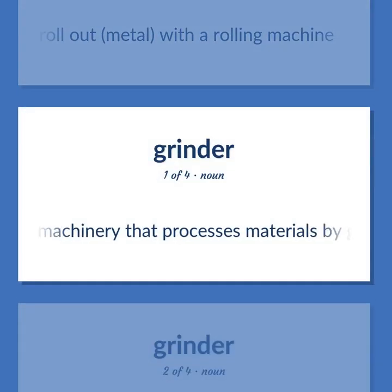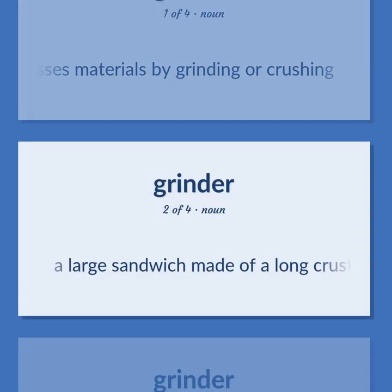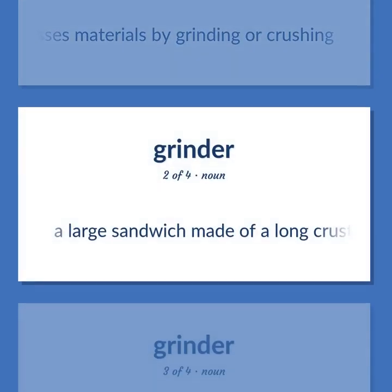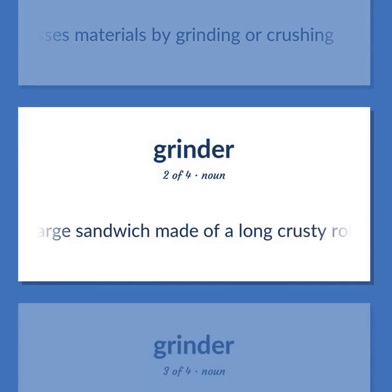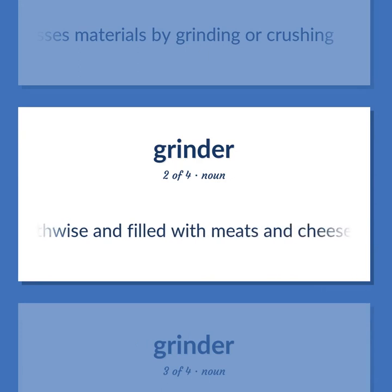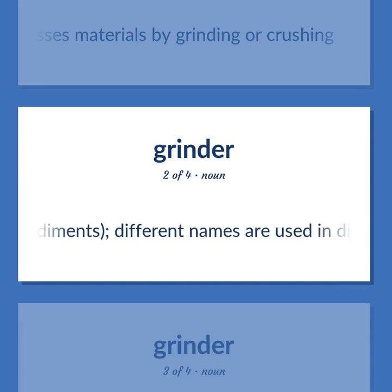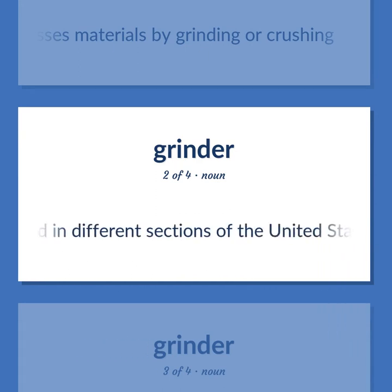Mill: Machinery that processes materials by grinding or crushing. Also: a large sandwich made of a long crusty roll split lengthwise and filled with meats and cheese, tomato, onion, lettuce, and condiments — different names are used in different sections of the United States.